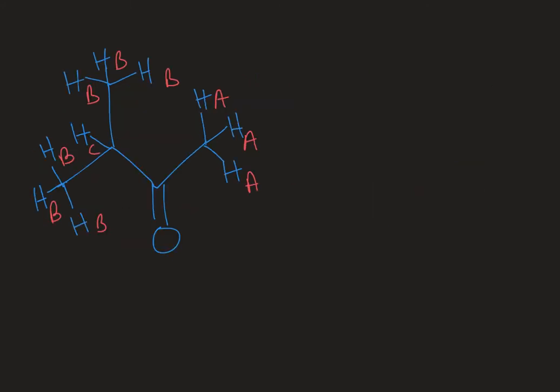In this next example, we have a molecule with three unique types of protons, so we would expect three signals — all with different splitting because of their unique environments and next-door neighbors. HA is next to a carbonyl carbon, and there are no protons on it, so this is zero plus 1 — N plus 1 — giving a singlet.